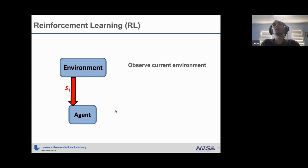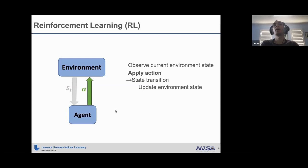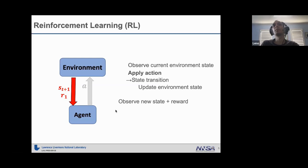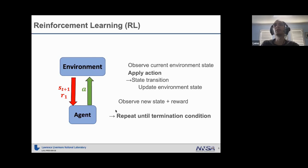Starting now with the technical presentation — after a whole day of workshop about reinforcement learning, you've already seen this picture a lot of times, so I won't spend much time on it. Basically, we have an agent in the environment. The agent can observe the environment and, based on the state, applies one action. This action causes a state transition, and after that the agent is able to observe the next state and the reward signal. The reward signal is the only feedback the agent has to solve the task. This is the basic reinforcement learning setting.